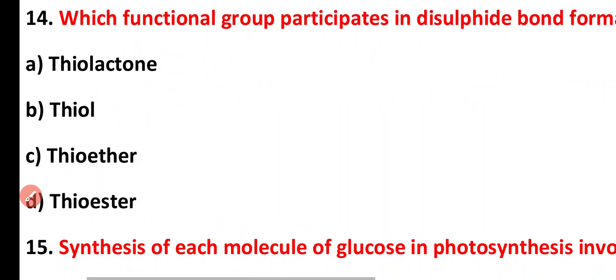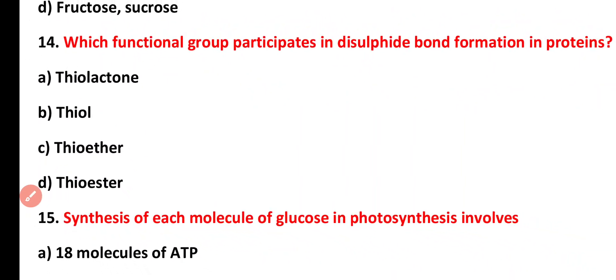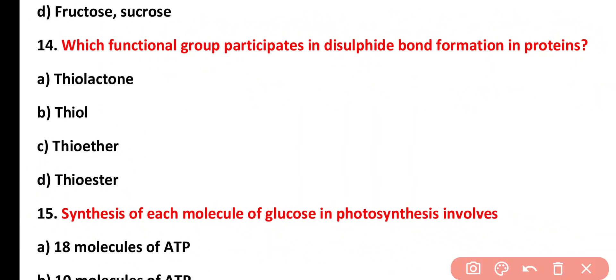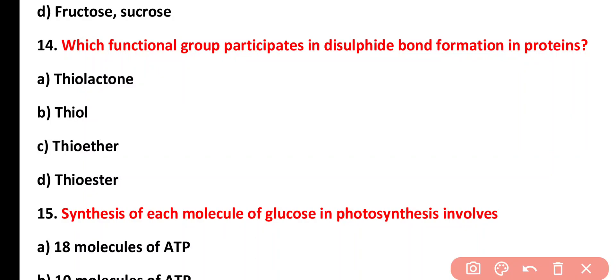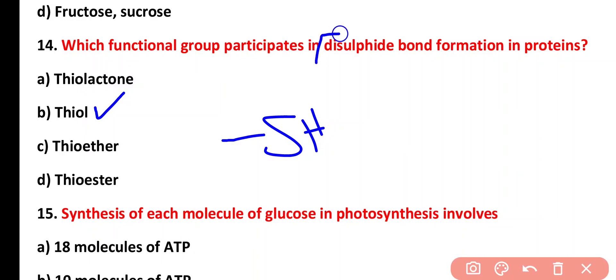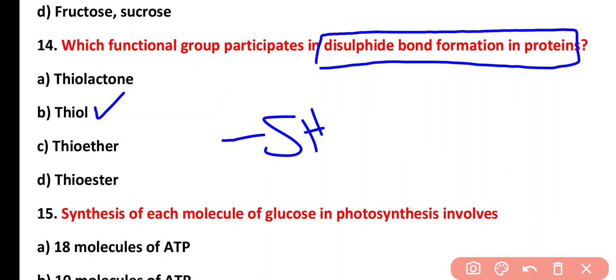Question fourteen: which functional group participates in disulfide bond formation in proteins? Options: thioacetone, thiol, thiol ether, thiol ester. The correct answer is option B. The thiol S-H functional group participates in disulfide bond formation in proteins.